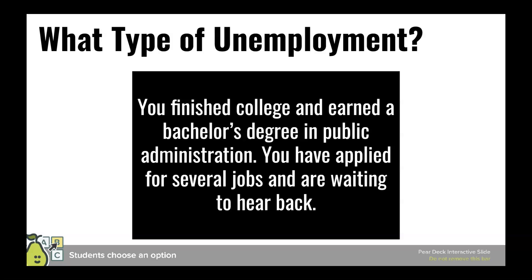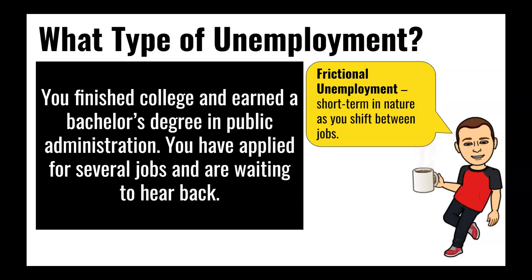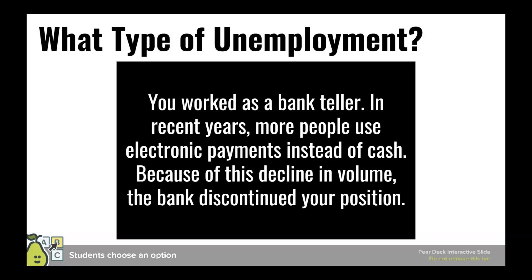Let's go through some examples to see if you understand how to differentiate between these types. Press pause, make your guess, then press play to see if you're right. First: you finished college and earned a bachelor's degree in public administration. You've applied for several jobs and are waiting to hear back. What type of unemployment are you? In this case, you would be frictionally unemployed — it's short-term in nature, you're shifting between jobs, and you have skills the labor market wants, so you should find a job in the near future.